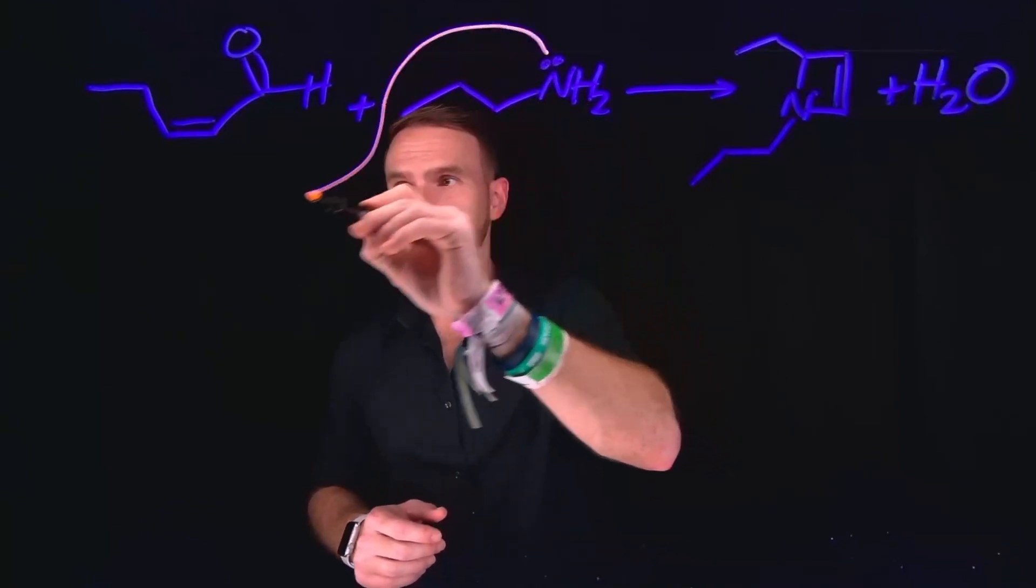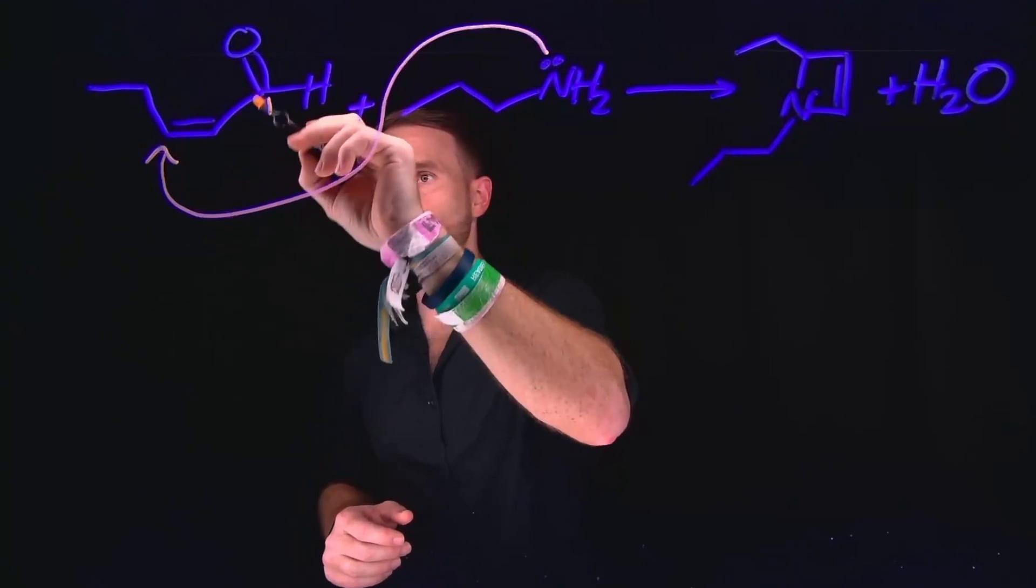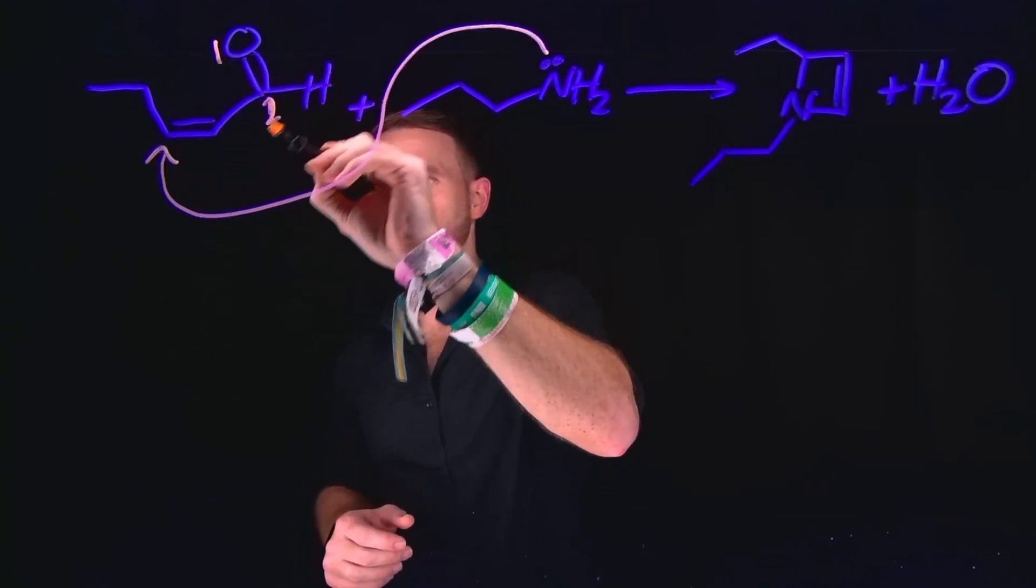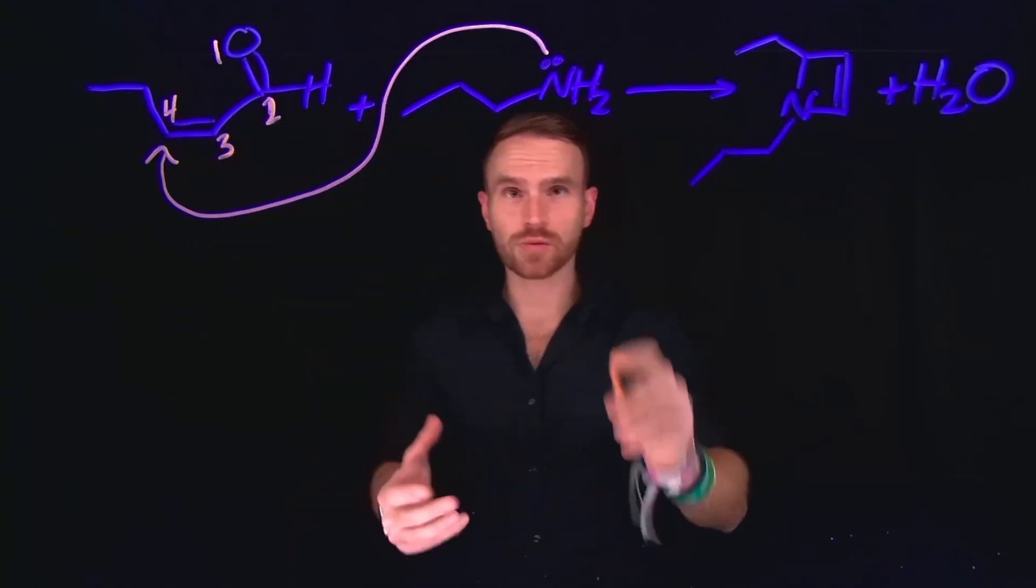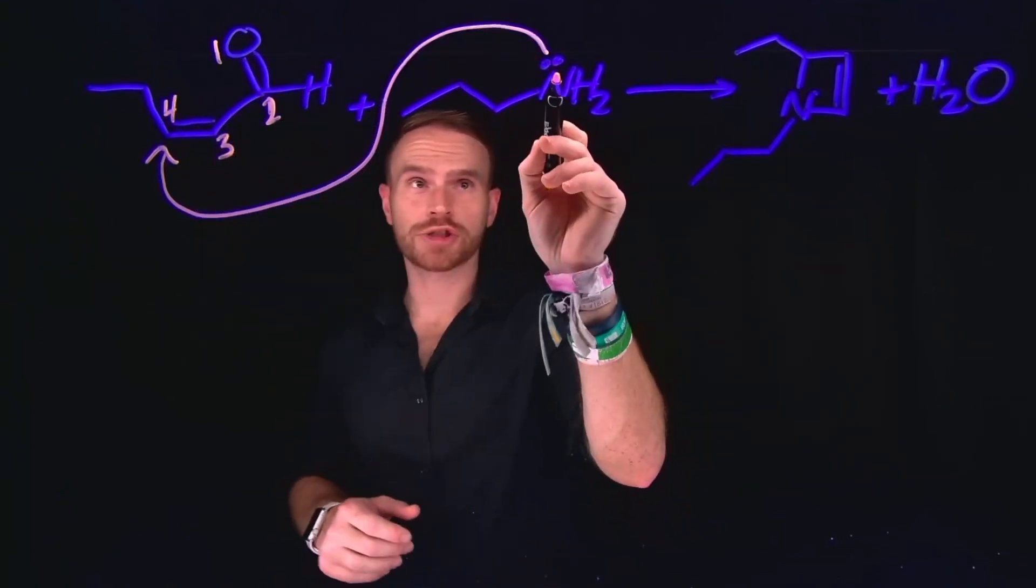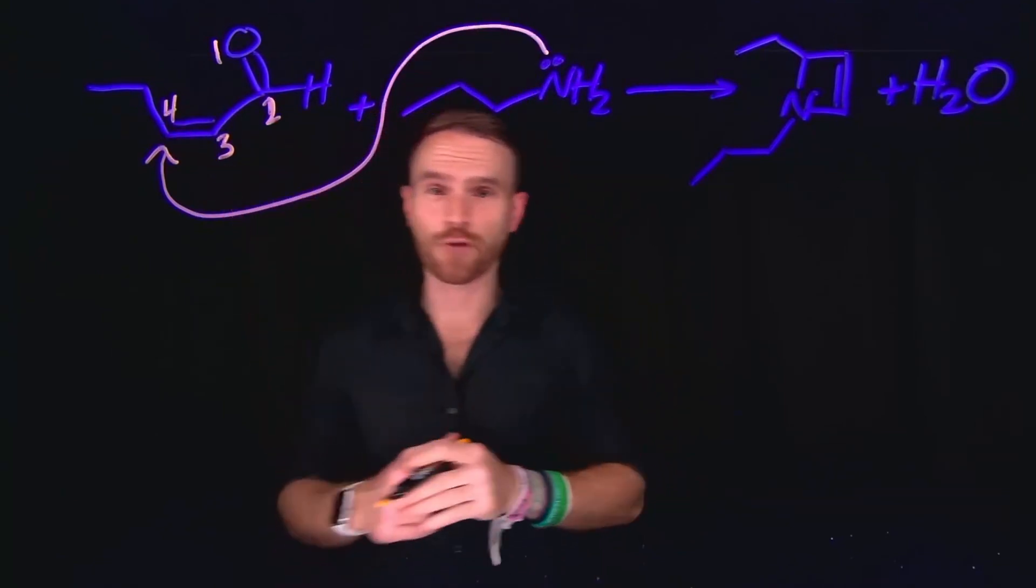The first step is a 1,4 Michael addition, where the nitrogen will attack at the 4 position. If this is 1, and this is 2, and this is 3, then we would call this the 4 position. And this would do a 1,4 Michael addition by the nitrogen nucleophile attacking at the 4 position.